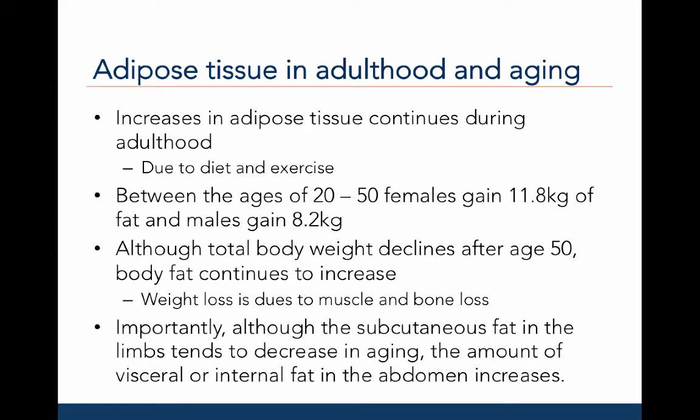Adipose tissue continues to increase across adulthood, likely due to poor diet and a lack of exercise. Between the ages of twenty to fifty, females gain about 11.8 kilograms of adipose, while males gain 8.2 kilograms. Although total body weight declines after age fifty, body fat continues to increase. Recall that the main cause for age-related weight loss is due to a loss of muscle mass and bone mass.